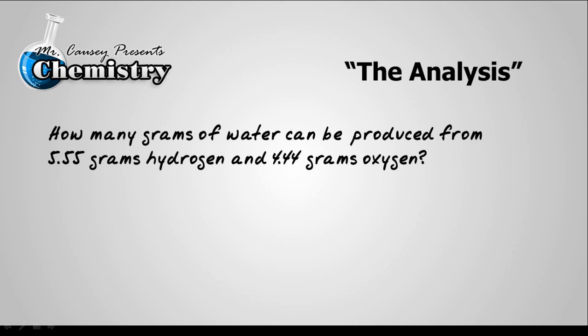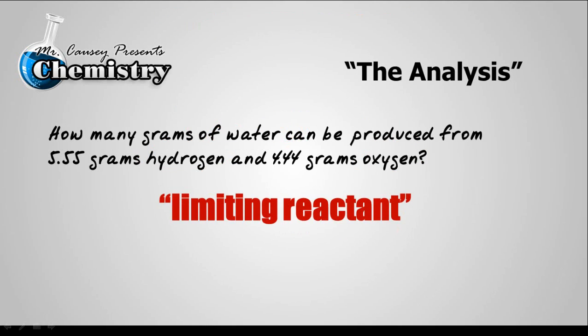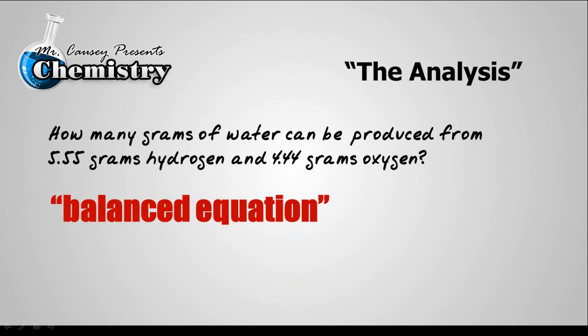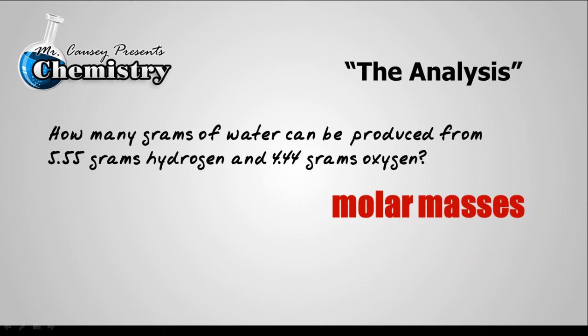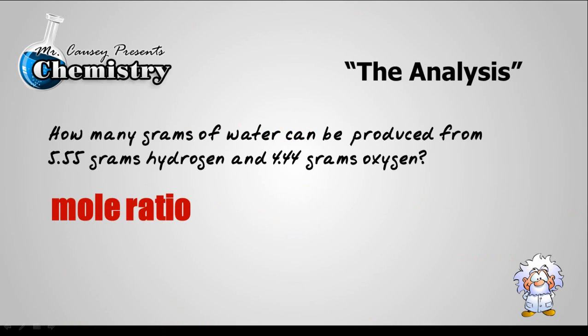Let's analyze the problem. We have hydrogen and we have oxygen and together they're going to produce water. Therefore we need to find a limiting reactant and then a balanced equation. We're going to need molar masses and we're going to need the mole ratio. So let's get started.